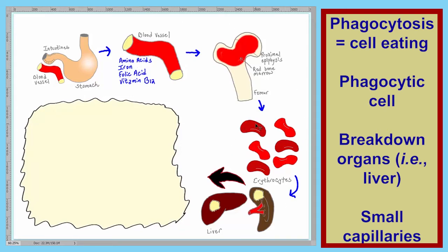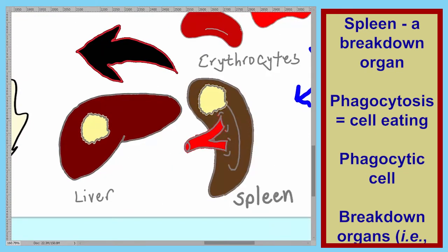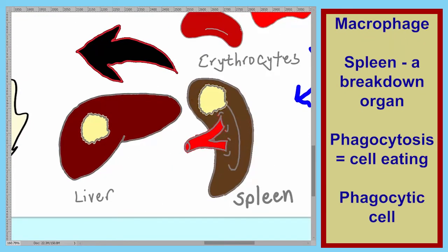The red blood cells, as they travel through circulation, these two organs — the liver and the spleen — sense whether the red blood cells have reached the end of their usefulness. So let's annotate the spleen here. The cells in the spleen which actually phagocytose the red blood cells are macrophages. So let's indicate those here — these cells are macrophages.